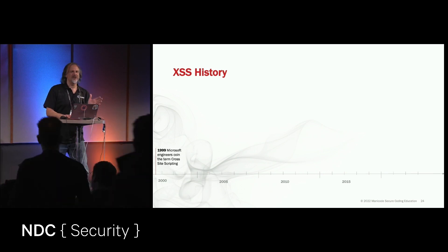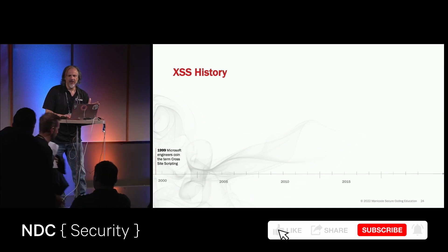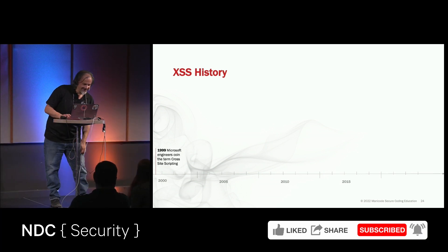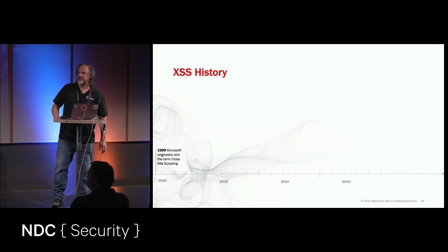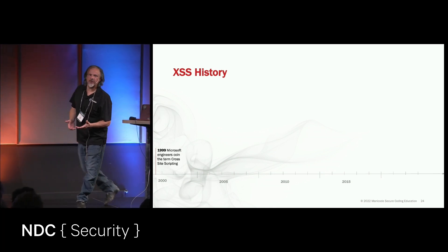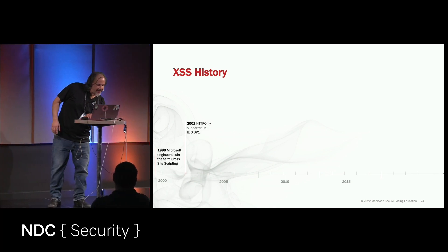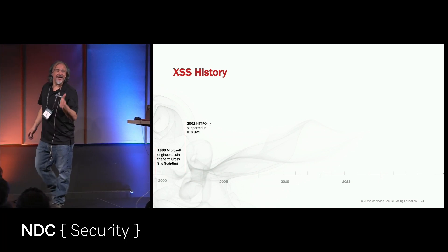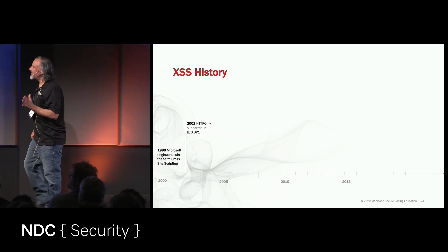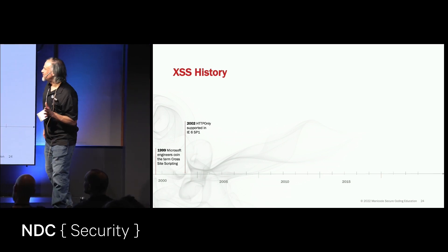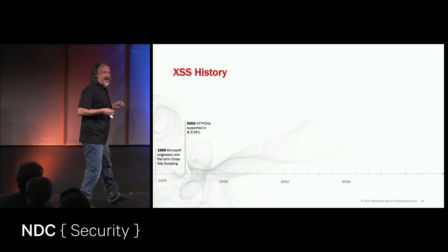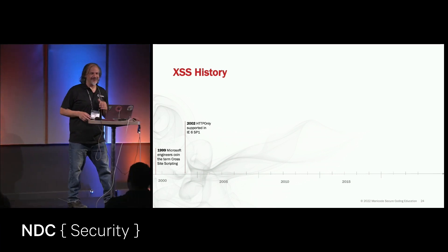Cross-site scripting was first coined as a term in 1999 — we see Microsoft engineers coin the term. In 2002, we see Microsoft releasing the HTTP-only flag in Internet Explorer 6 Service Pack 1. Internet Explorer 6 — just saying that word makes me feel physical pain, just for the record.